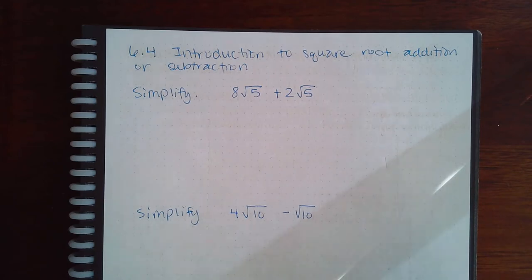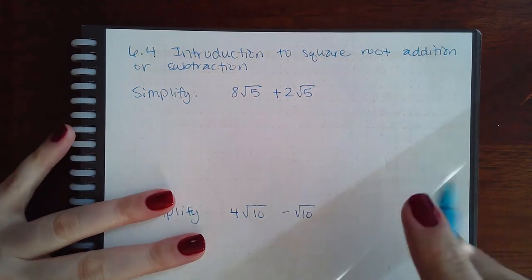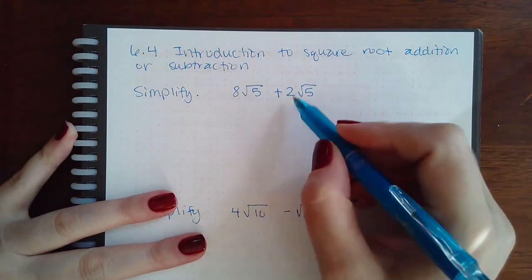The only thing is, later on, the square roots you might have to simplify first before you can add or subtract, which is why we had to learn the simplifying first before we would be able to do the adding and subtracting on their own. So essentially what happens is...